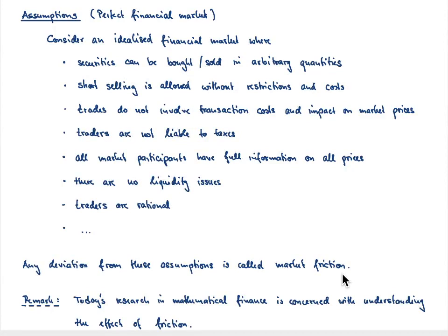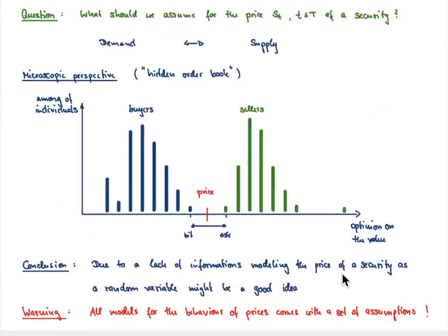What we should discuss now is how the price of a financial security is built. What should we assume about the price of a financial security at a point in time? Of course, there should be guiding principles of demand and supply in the background. And here is the microscopic perspective, which reflects that in some respect. What I have plotted here is the following.